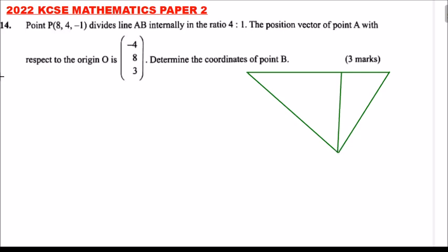So that is the diagram we can use. Here we have A, we have P, and we have B. We have O. So the ratio is 4 is to 1.